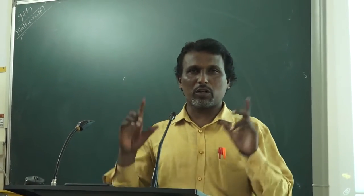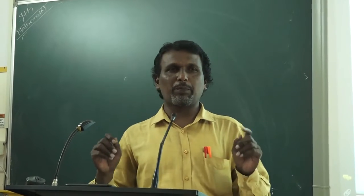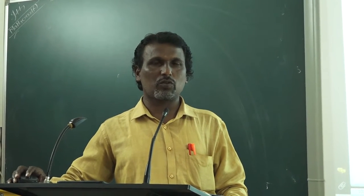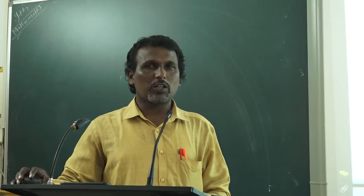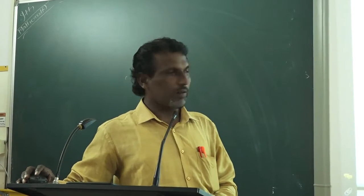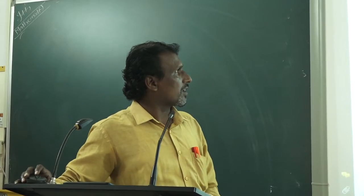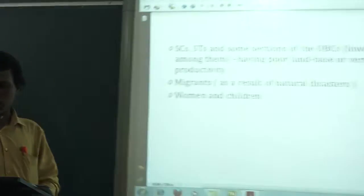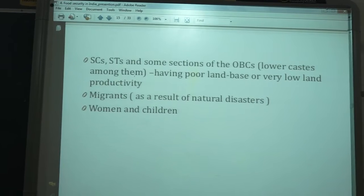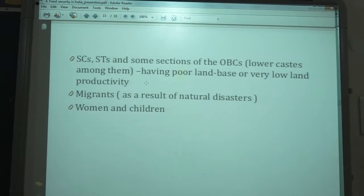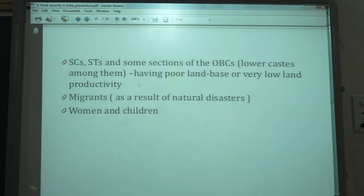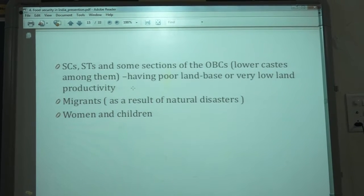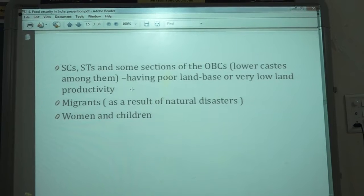On the basis of social composition, in our country people are classified under different categories: SCs (Scheduled Castes), STs (Scheduled Tribes), OBCs (Other Backward Classes). Among these, people belonging to lower castes and other backward classes are food insecure. People living in tribal areas, remote areas, and backward areas are also food insecure.